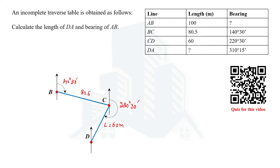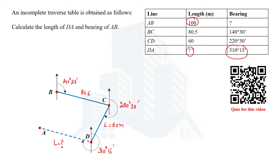We don't know the length of DA line, but we know its direction, so we can draw it. The DA line has a bearing of 310 degrees 15 minutes. This length is to be determined, and the bearing of AB is also to be determined. The length of AB is 100 meters. We know the exact direction of the DA line but not the length, so we don't know whether point A will be at one location or another along this dotted line.